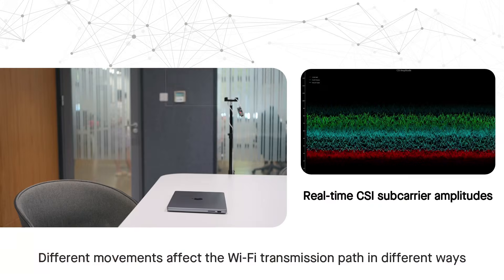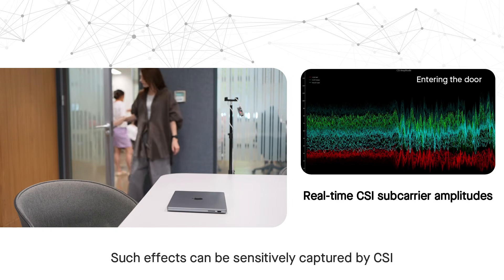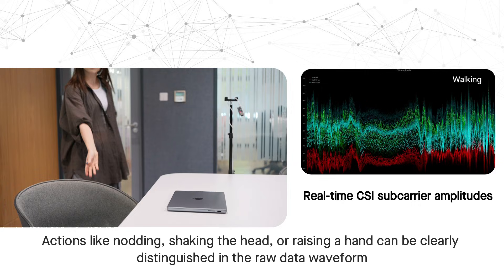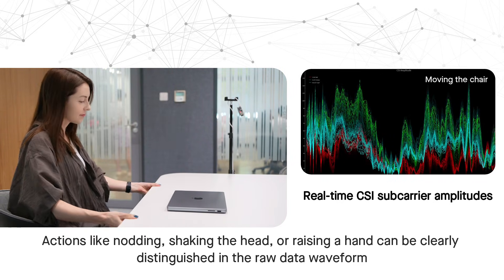Different movements affect the Wi-Fi transmission path in different ways. Such effects can be sensitively captured by CSI. Actions like nodding, shaking the head, or raising a hand can be clearly distinguished in the raw data waveform.